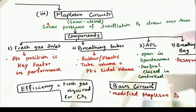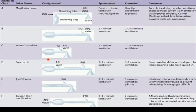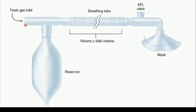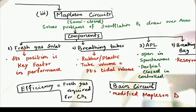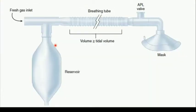The problems of insufflation and open drop anesthesia are solved by Mapleson circuits. Mapleson circuits are classified into classes A, B, C, D, E, and F. The parts of a Mapleson circuit are: a fresh gas inlet, a reservoir bag, a breathing tube, and an APL valve. The fresh gas inlet is the inlet for anesthetic gases, and its position is the key factor in the performance of the circuit.